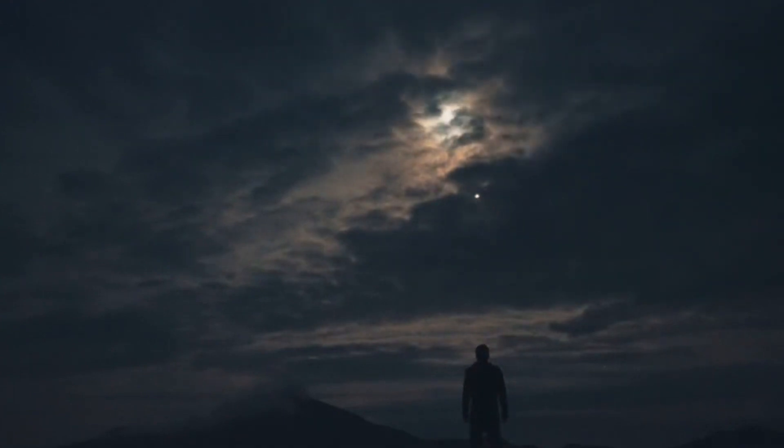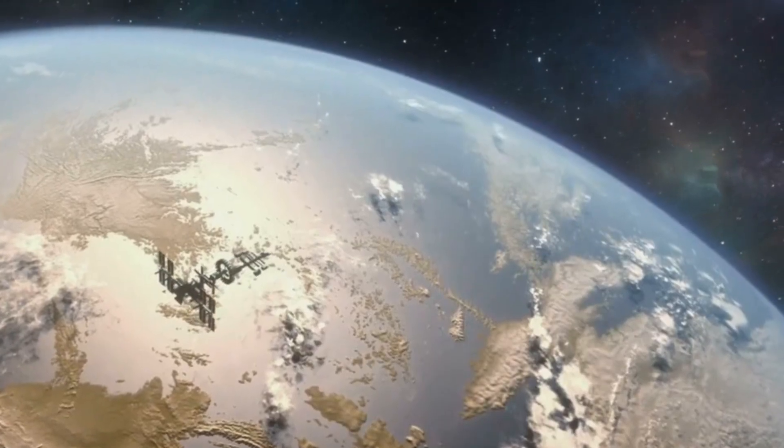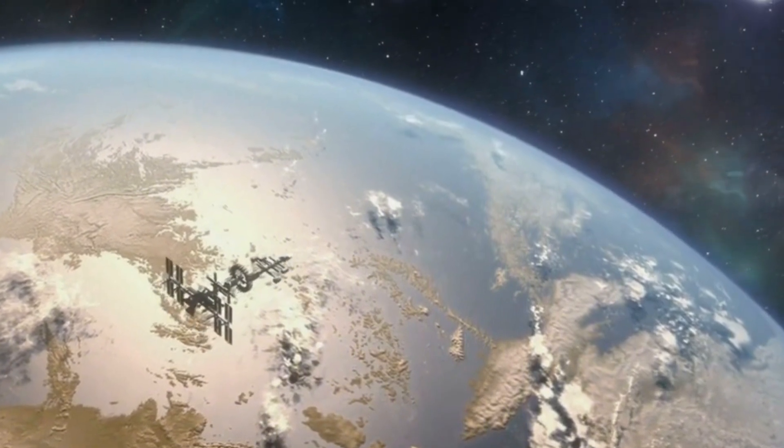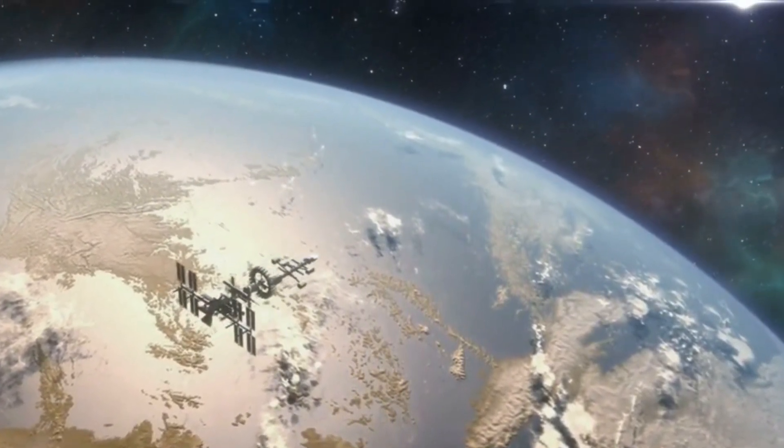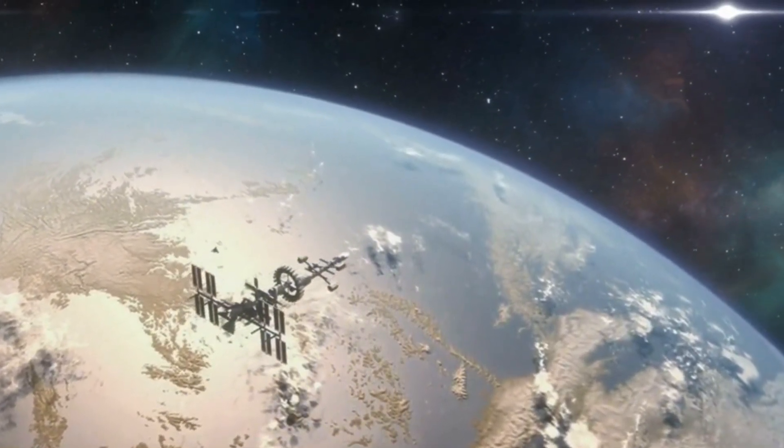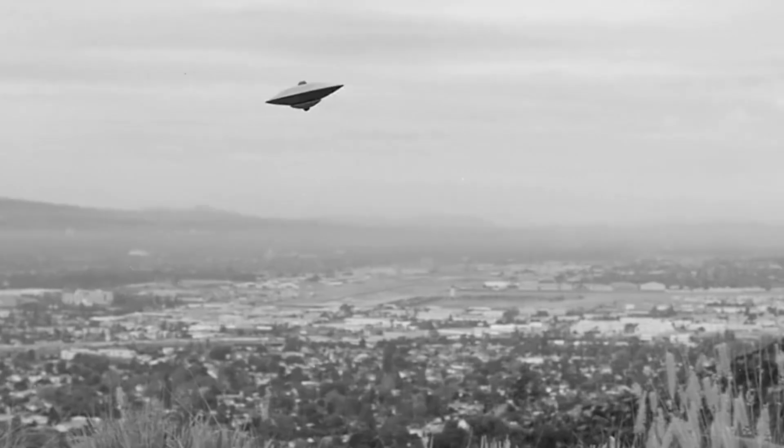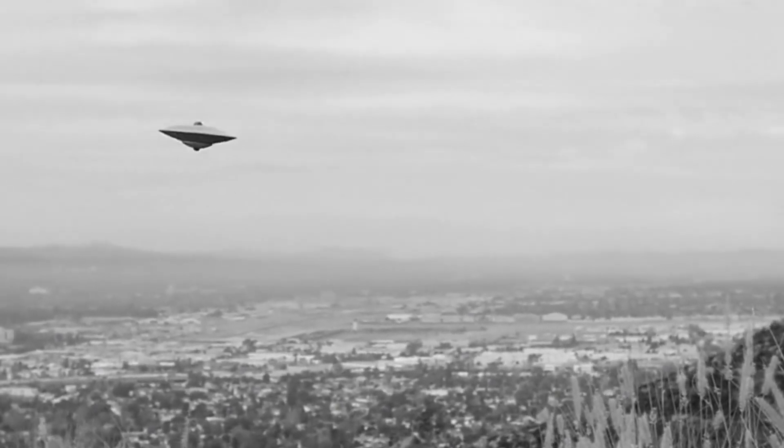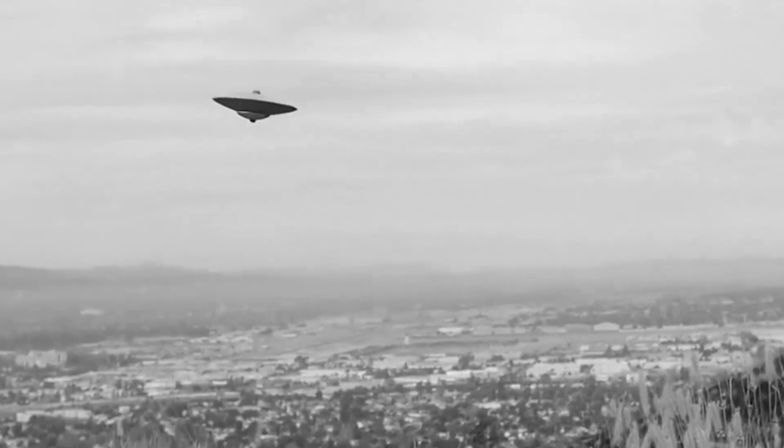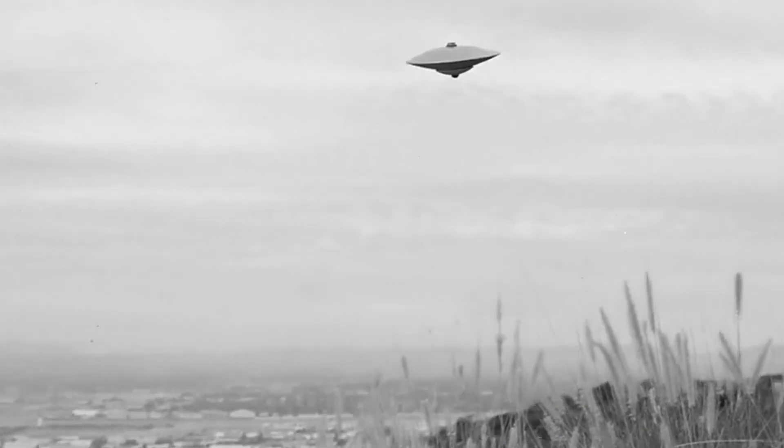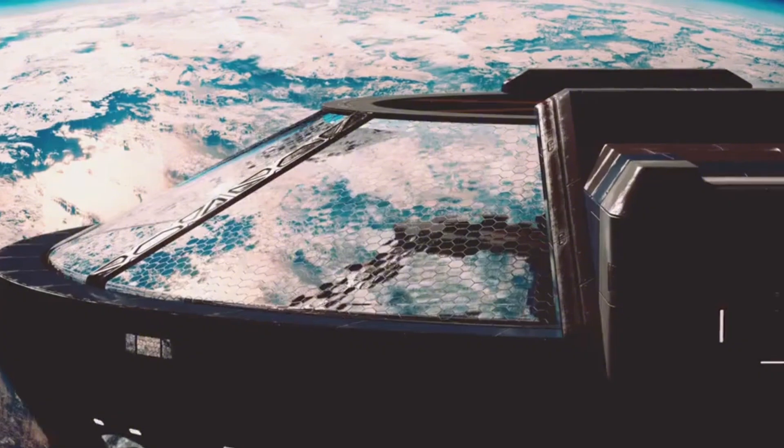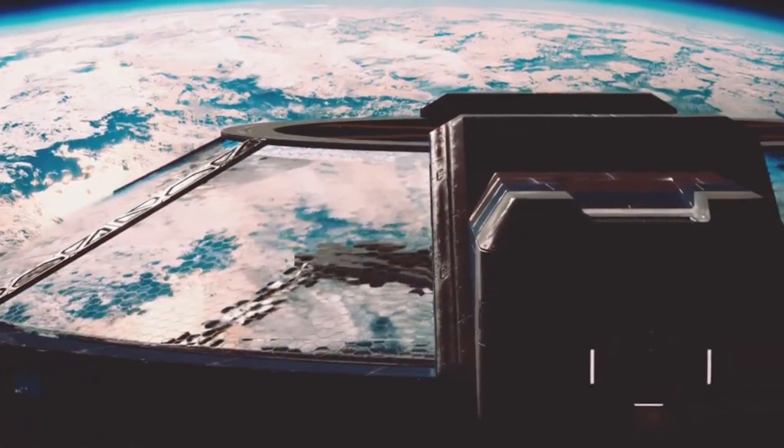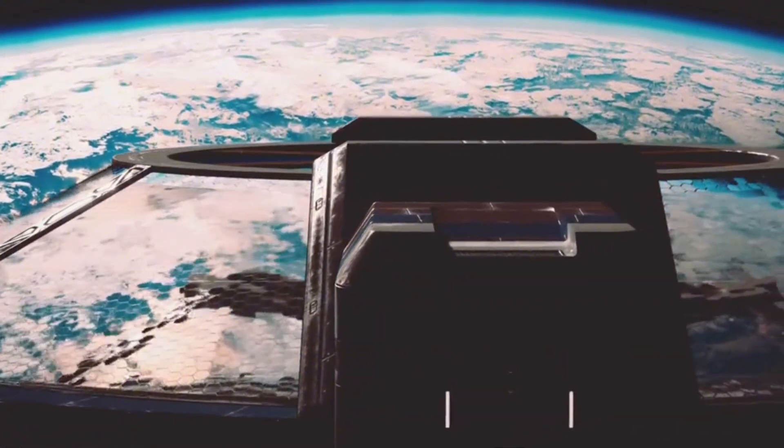Additionally, research has shown that during the early solar system, there was a period of heavy bombardment where Earth was continuously impacted by asteroids. This period lasted approximately 600 million years. However, it is important to consider that during this time, the high temperatures resulting from the impacts may have prevented complex molecules from forming.